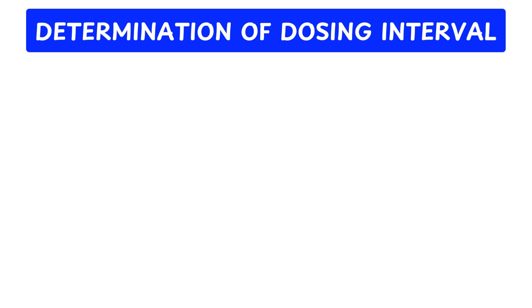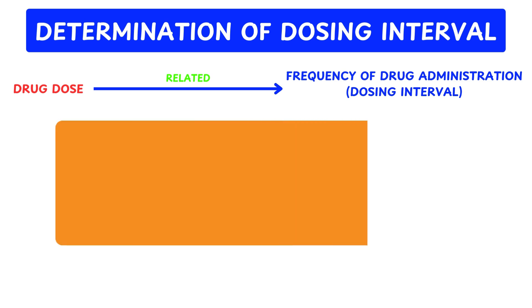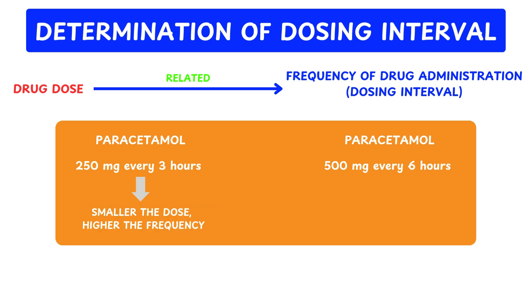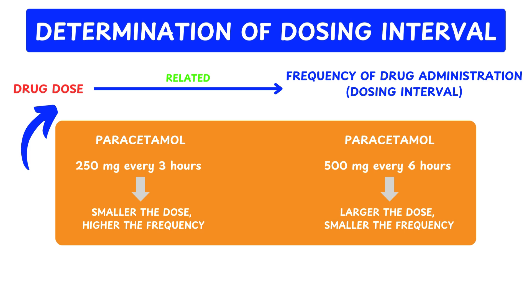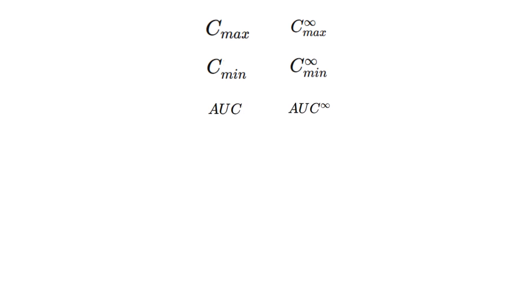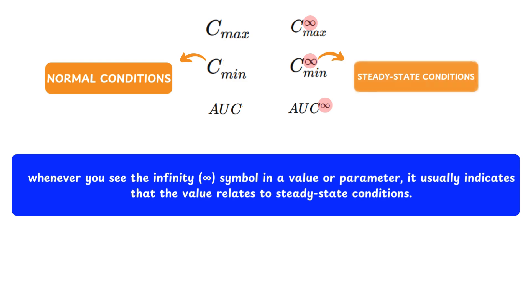The determination of dosing intervals is essentially about how often a drug should be taken. A key point is that the dose of a drug is always related to the frequency of its administration. To explain this, let's compare two dosing regimens for paracetamol: 250 mg every 3 hours versus 500 mg every 6 hours. A smaller dose requires more frequent administration, while a larger dose can be given less frequently — demonstrating that drug dose is directly related to the dosing interval. Now, observe these pharmacokinetic parameters. You may notice the infinity symbol, which indicates that the value relates to steady-state conditions.